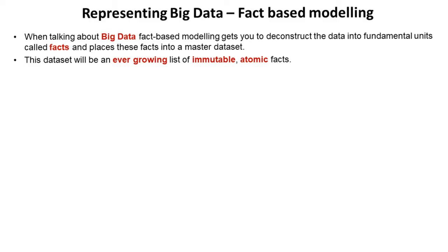Now the important thing about these facts and this data set is it's an ever-growing set. It's immutable and the facts are atomic, so the data set is only ever getting bigger and bigger. When you put something in there it can't change. So if a piece of data has to change, a new version is added with the correction, which means you've got a complete history and each of the facts at its lower level are storing one piece of information.